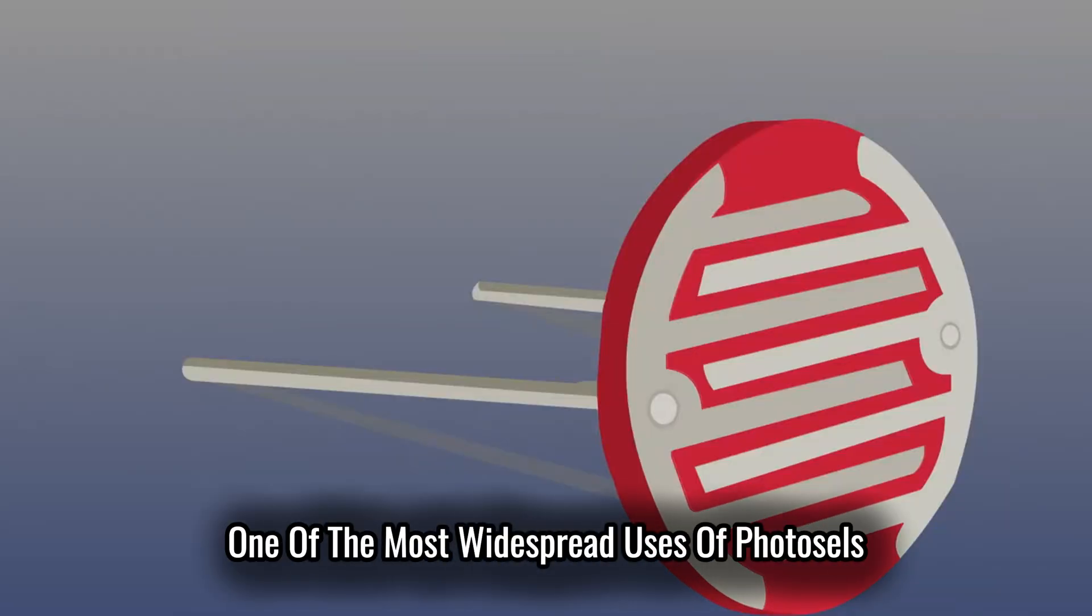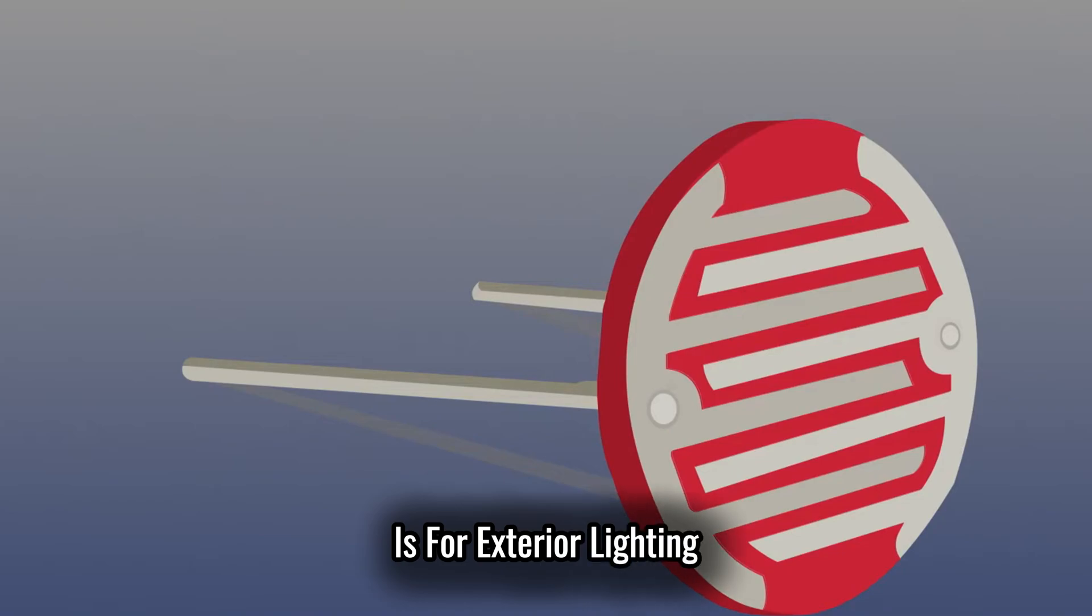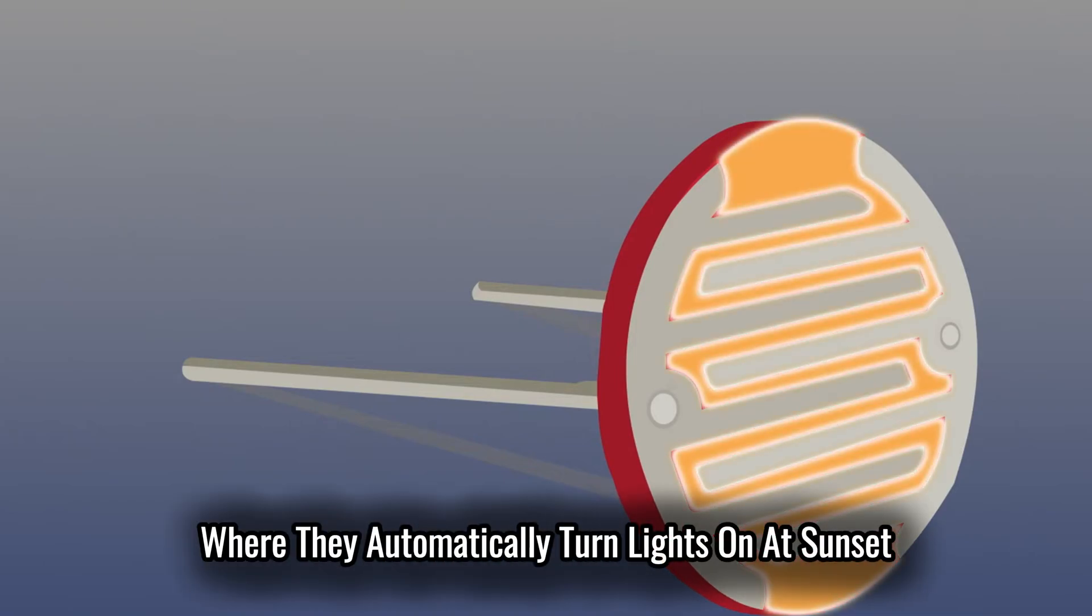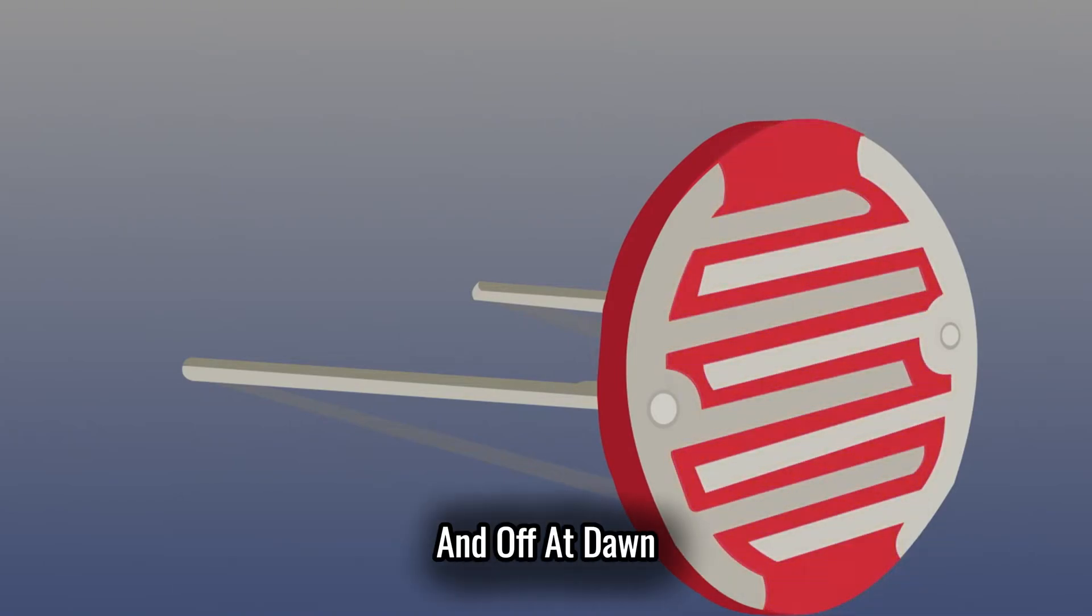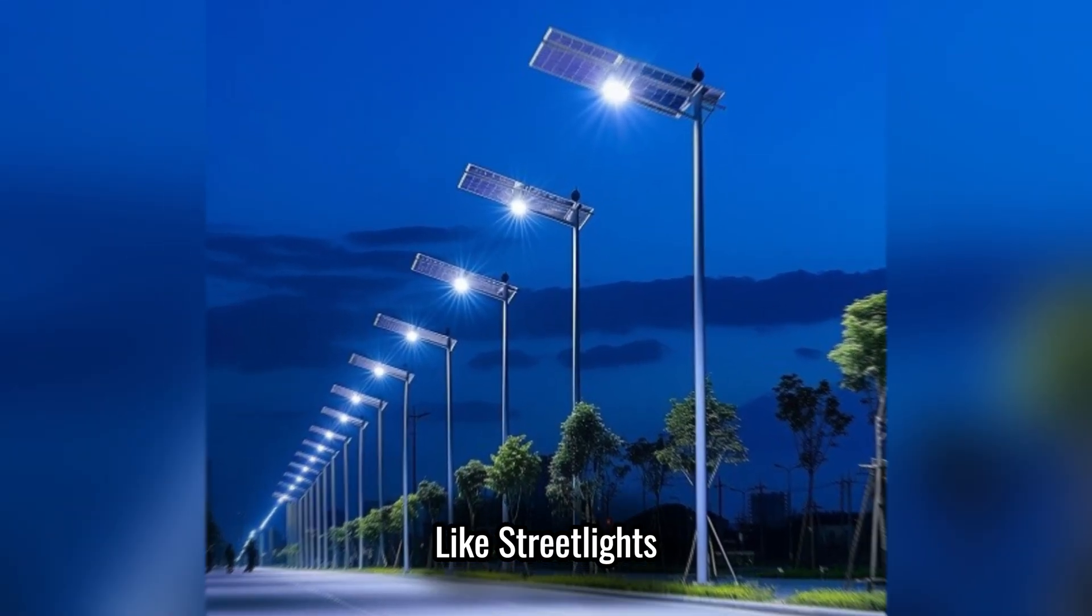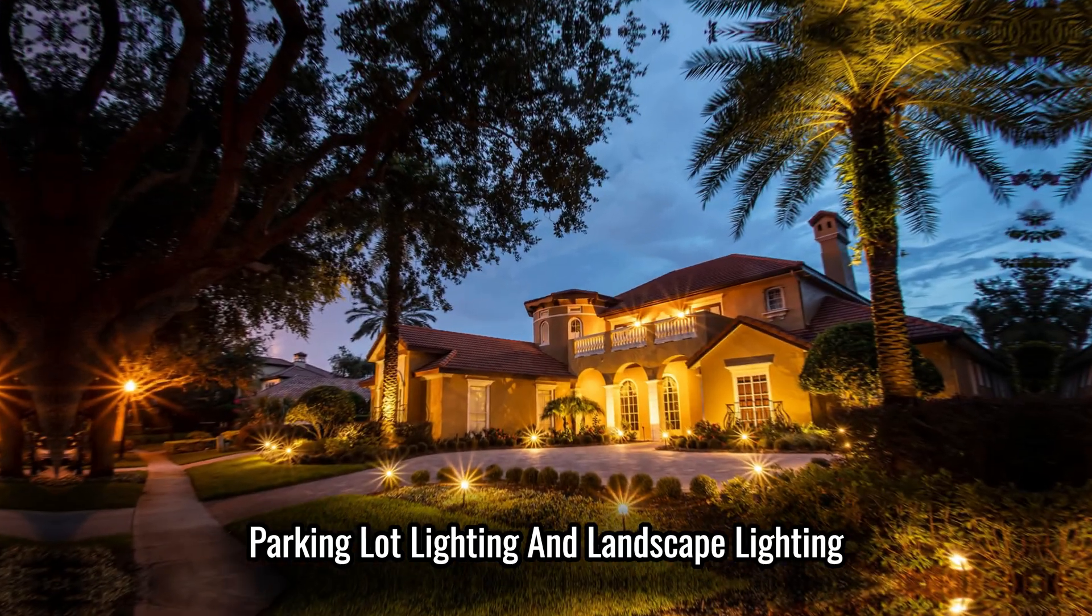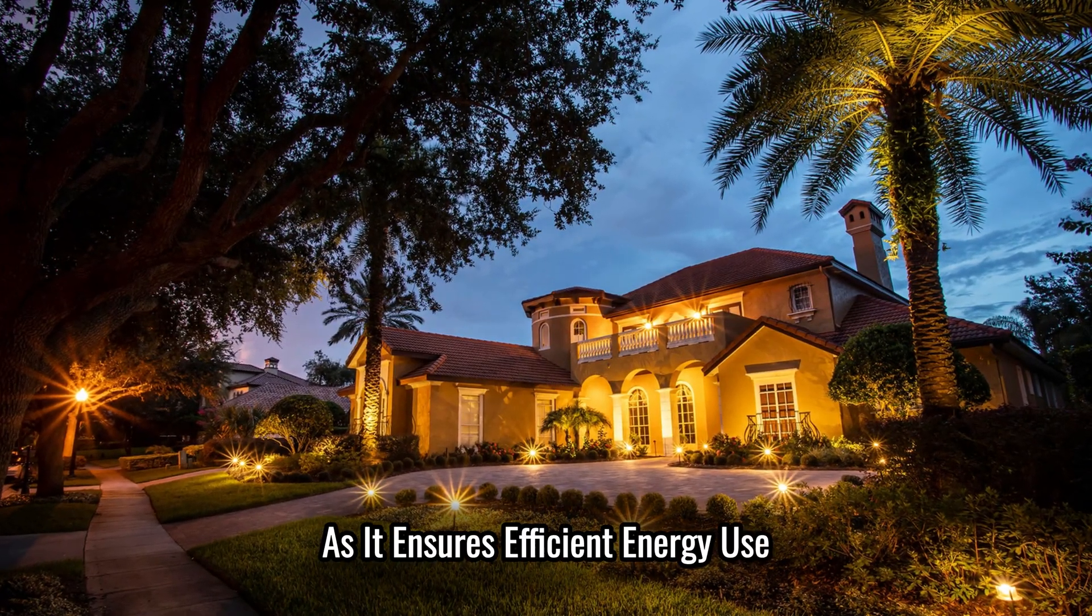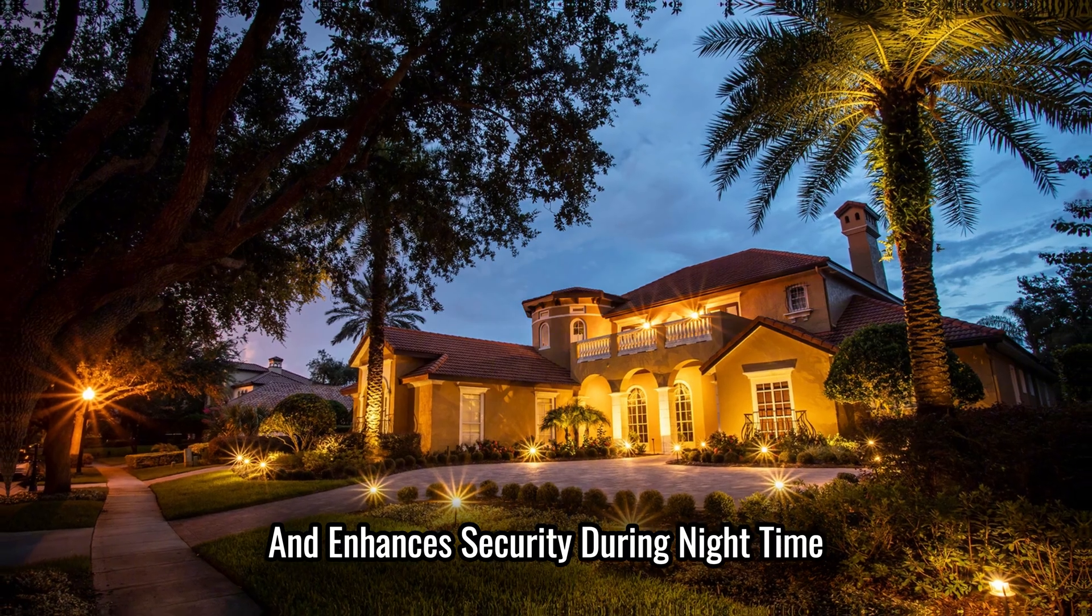One of the most widespread uses of photocells is for exterior lighting, where they automatically turn lights on at sunset and off at dawn. This function is highly valued in outdoor applications like streetlights, parking lot lighting, and landscape lighting, as it ensures efficient energy use and enhances security during nighttime.